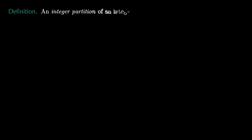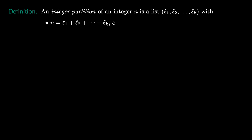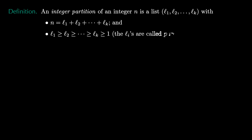An integer partition of an integer n is a list of integers l1, l2, up to lk, satisfying the properties that n is the sum of integers in the list, and the integers in the list are weakly decreasing and greater than or equal to 1. The elements in the list are called parts.